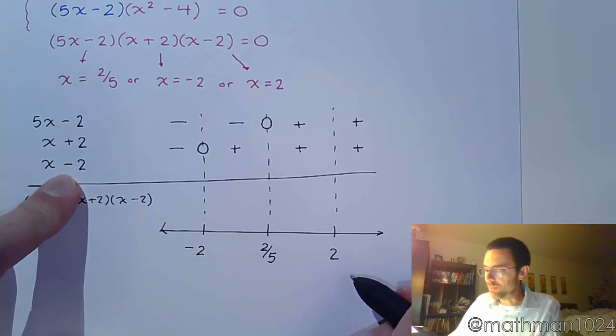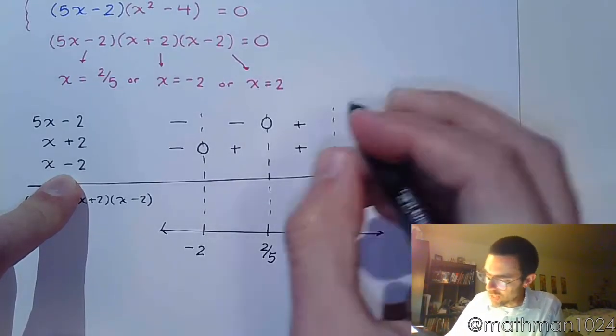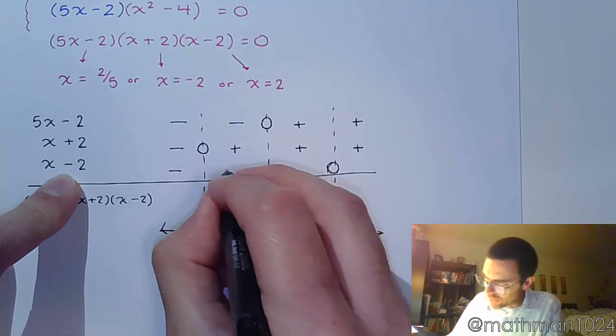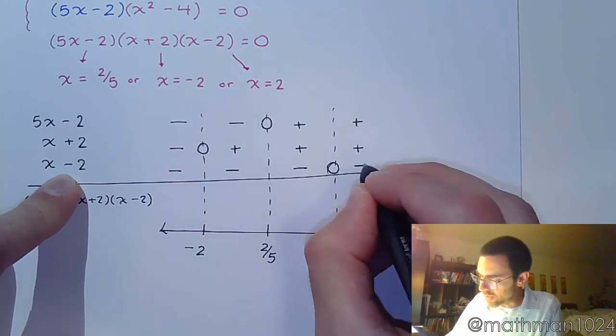And then x - 2. So x - 2 has a critical value over here at 2. And just like everybody else, he's going to be negative leading up to that, and then he's going to be positive.